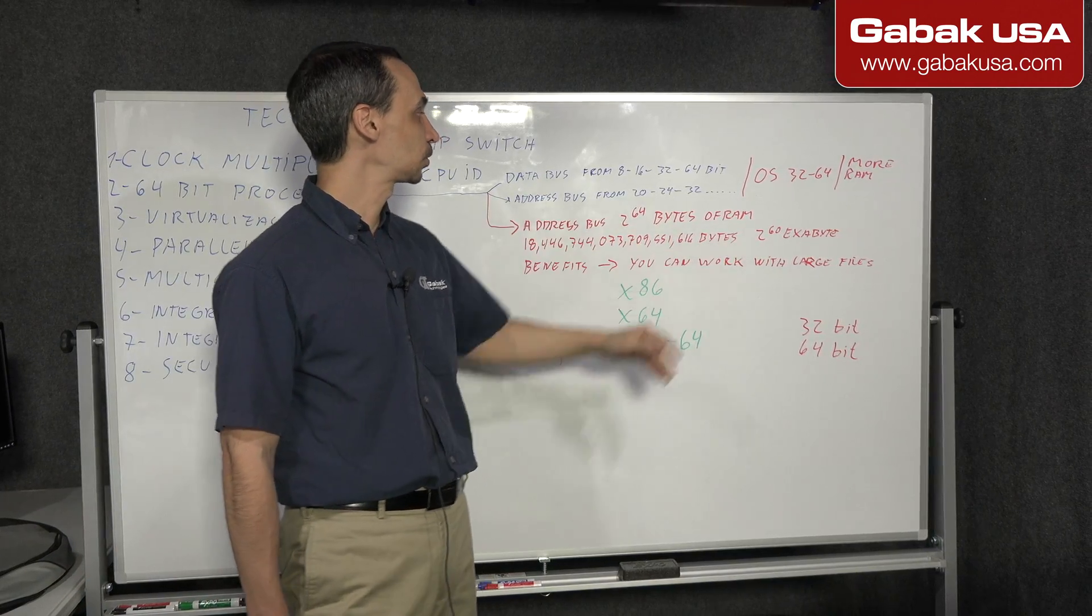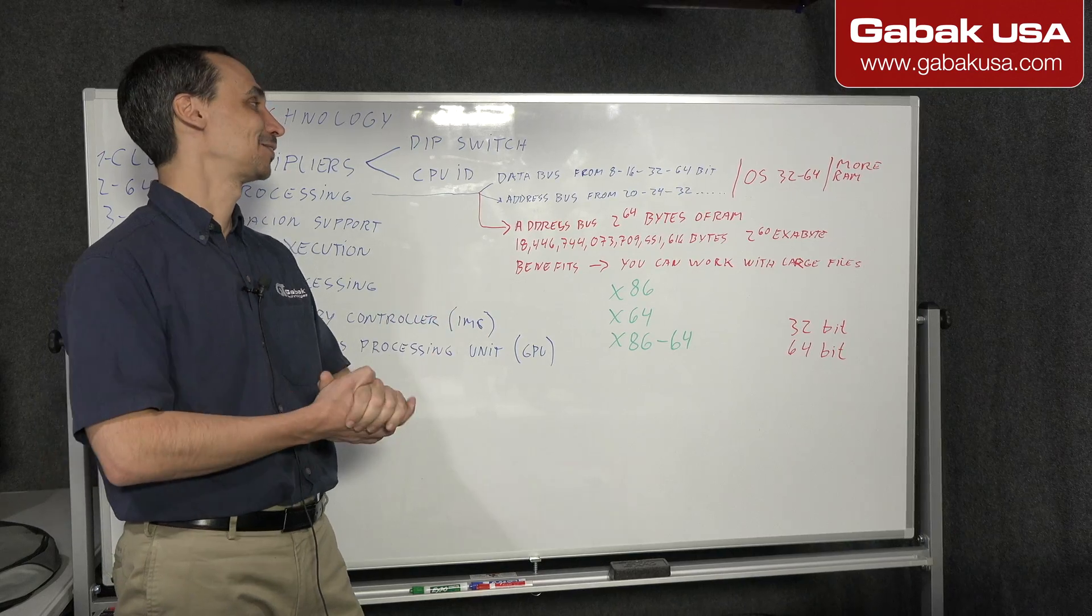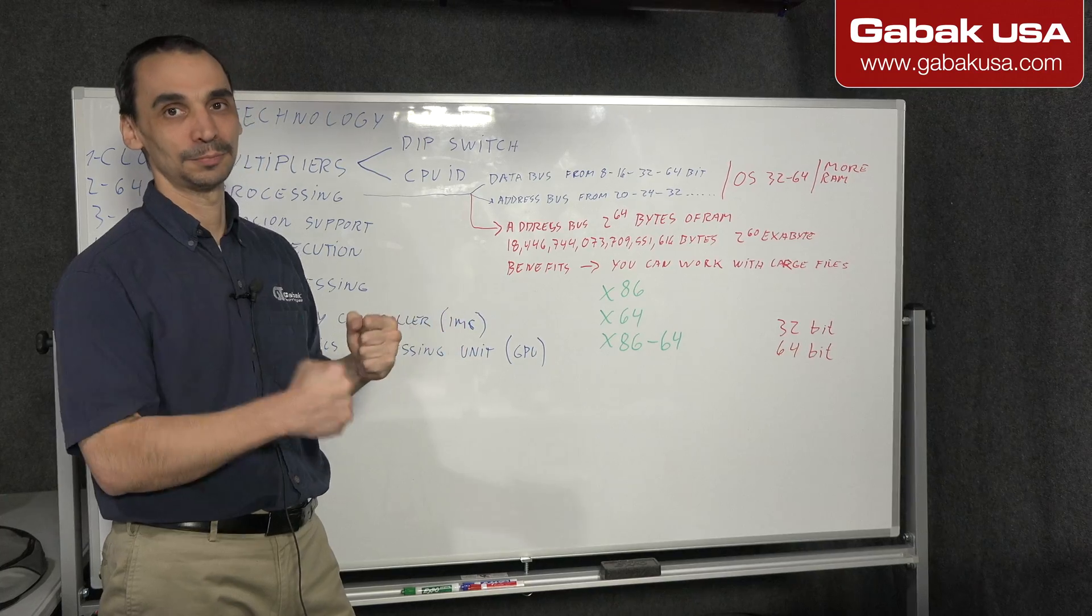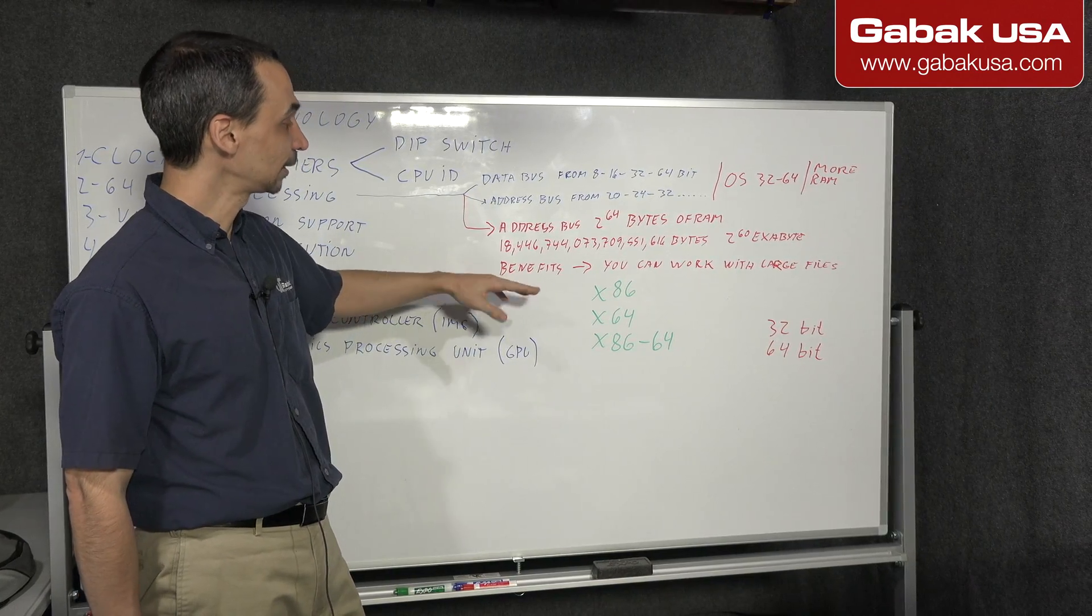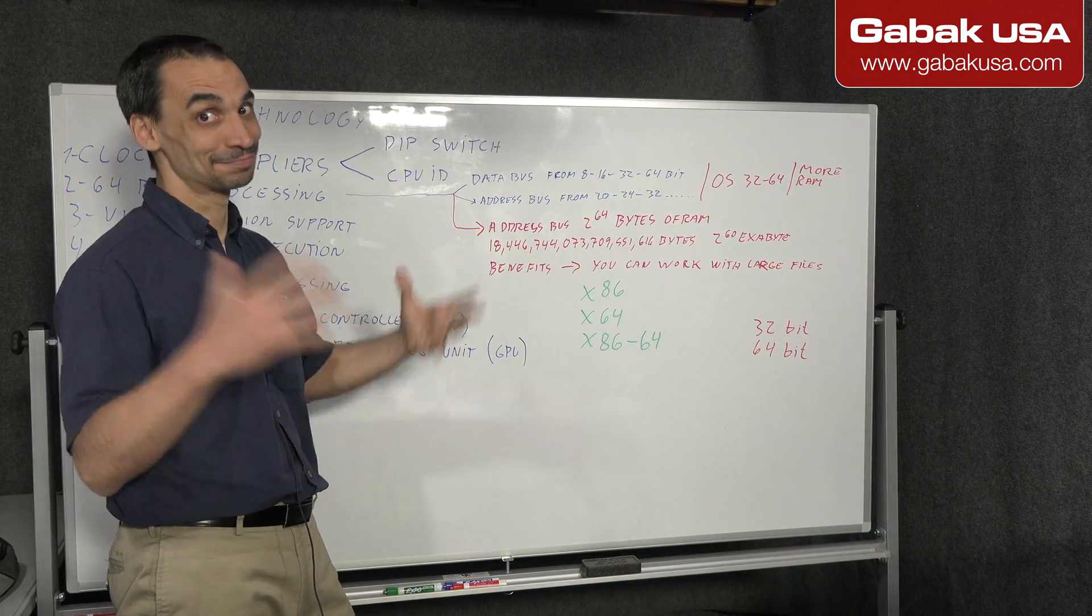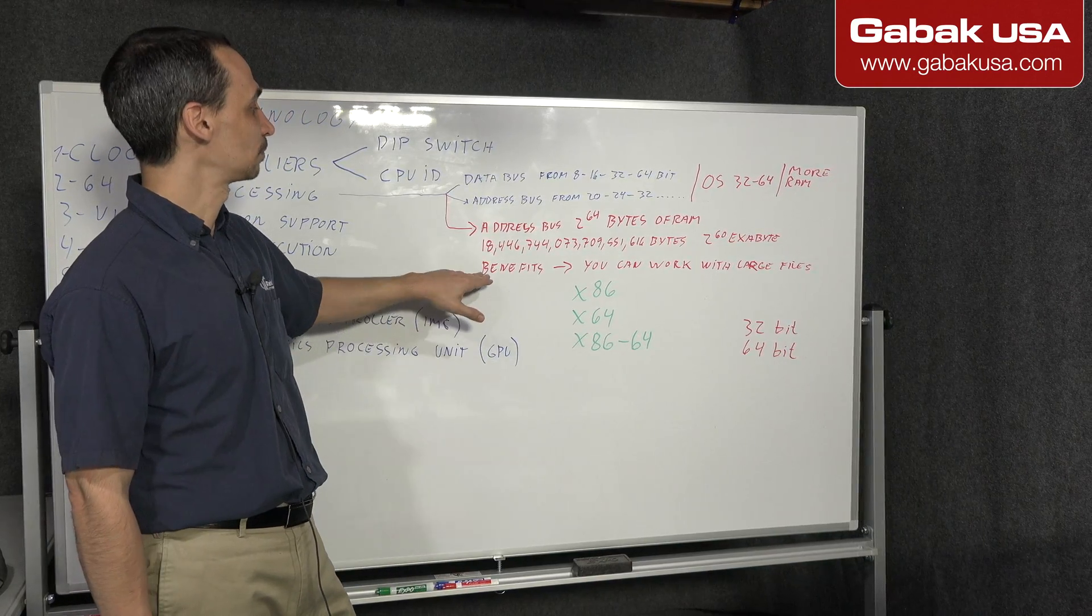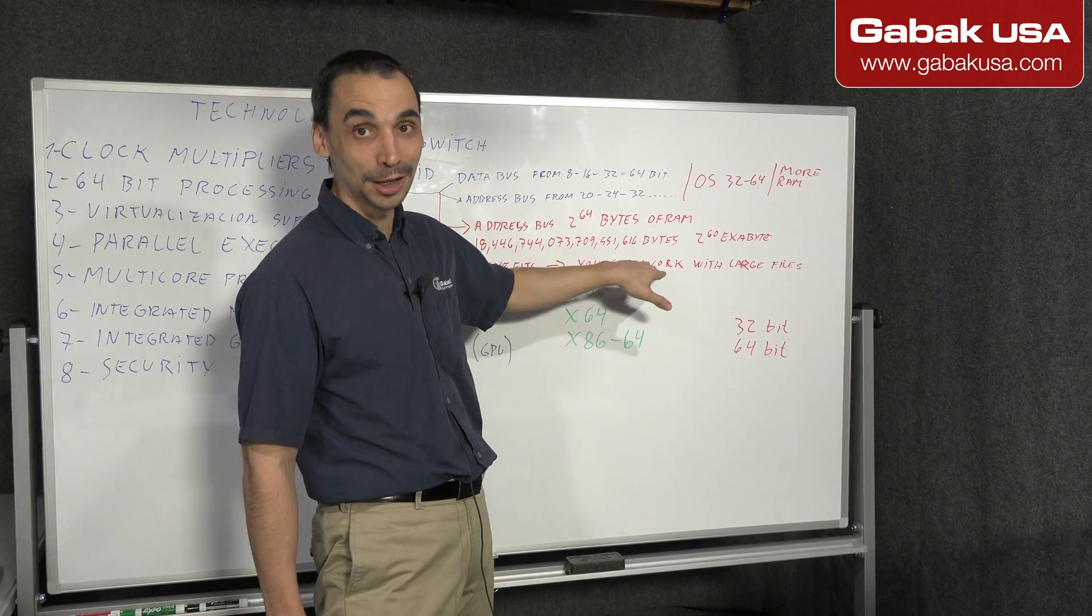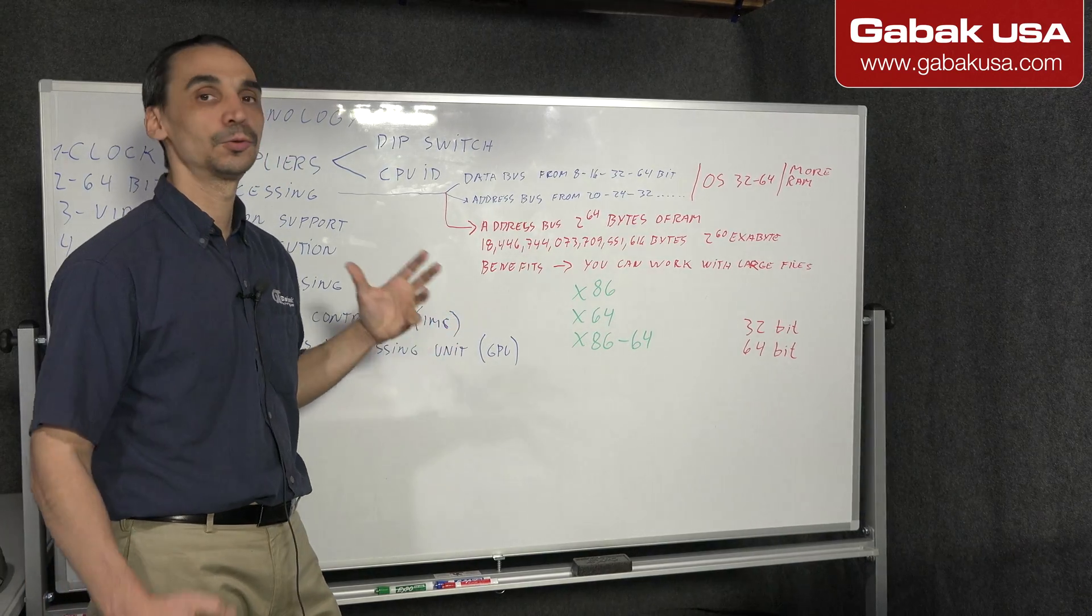If you want to have a lot of memory and if you can have a huge bus, of course, you're going to be able to do that. So the main benefit of 64-bit is that you can have almost unlimited amount of memory. The benefit that you have here, as I wrote, is you can work with large files.